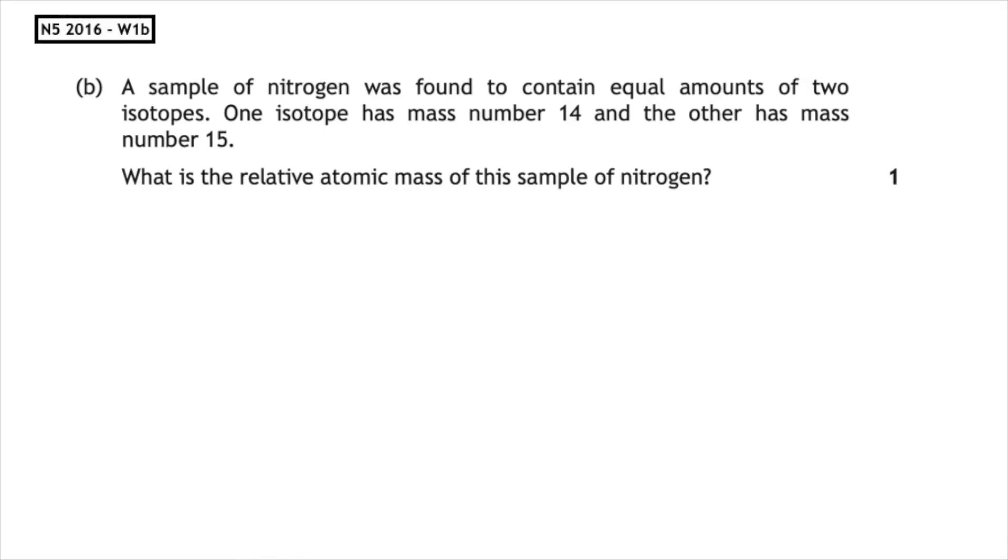This past paper question is from the National 5, 2016, written 1b. A sample of nitrogen was found to contain equal amounts of two isotopes. One isotope has a mass number of 14 and the other has a mass number of 15. What is the relative atomic mass of this sample of nitrogen?